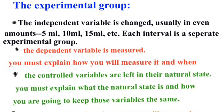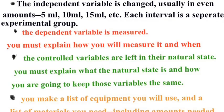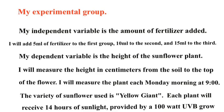When you look at the experimental group that we're going to compare with the control group to see if a change happened, everything is the same — you can actually cut and paste 85% of this explanation into this section. The only thing you need to change is the independent variable. In this case, I'm going to add five milliliters to the first group, 10 milliliters to the second group, and 15 milliliters to the third group of fertilizer. We usually try to keep them evenly spaced like that.